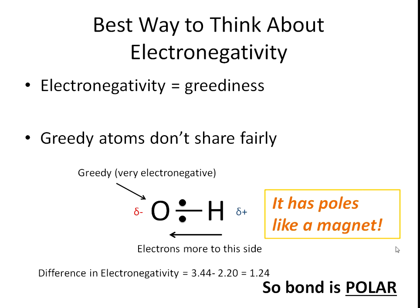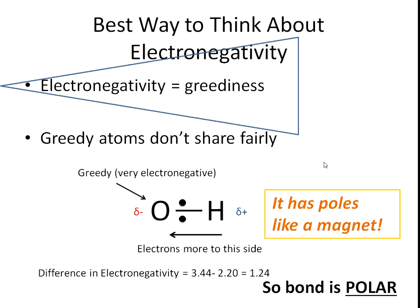This is important, so we'll put that in a box so it stands out. Polar bonds are polar because they have poles like a magnet — it's a good way to think about it. But the most important thing is electronegativity. Think of it as greediness; just equate those two ideas in your head. We'll put that in a triangle because it's very important.